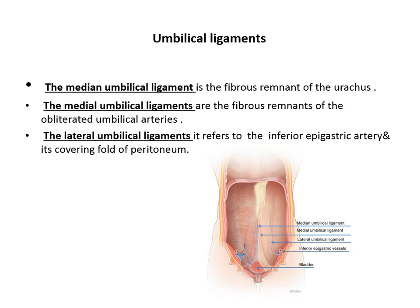The umbilical ligaments of the anterior abdominal wall include: the median umbilical ligament in the midline, a fibrous remnant of the urachus extending from the apex of the bladder to the umbilicus; two medial umbilical ligaments, fibrous remnants of the obliterated umbilical arteries; and the lateral umbilical ligament, which refers to the inferior epigastric vessel and its peritoneum. All ligaments are covered by the peritoneum.